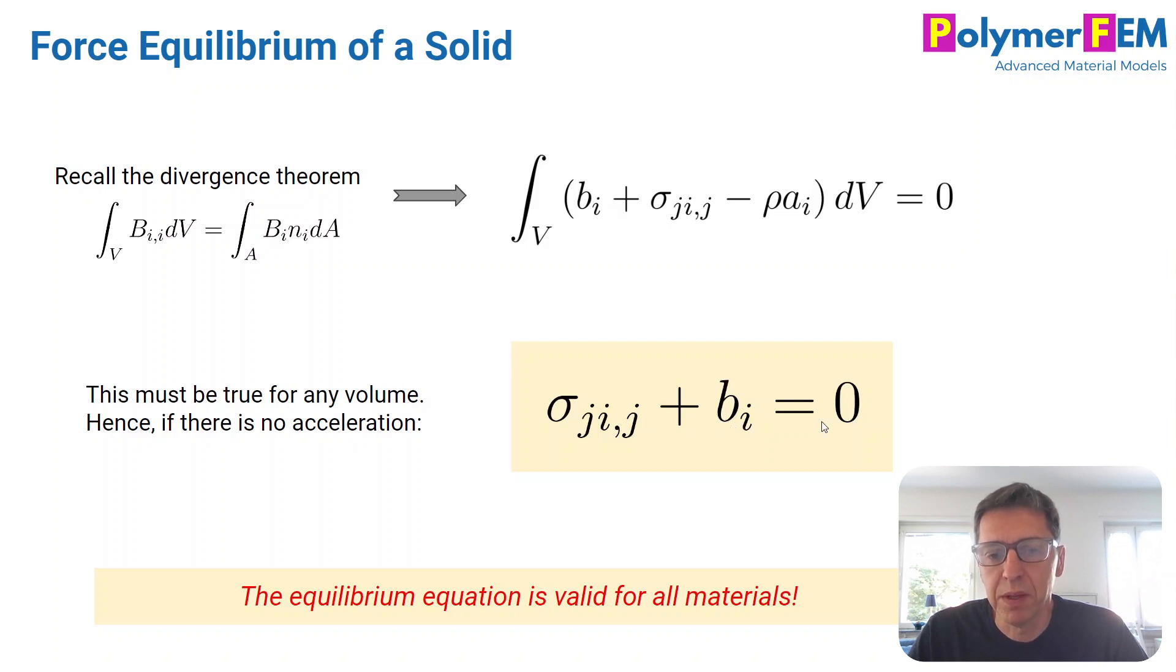Then the equilibrium equation can be written like this: sigma_ji,j plus the body force bi has to be zero. Recall when I write sigma_ji,j this is index notation—sigma is a second-order tensor with two components, and comma j is a partial derivative with respect to the j direction. So that's the equilibrium equation I quickly derived. What's cool about it is it's valid for any materials; in all materials this is always true if it's in equilibrium.